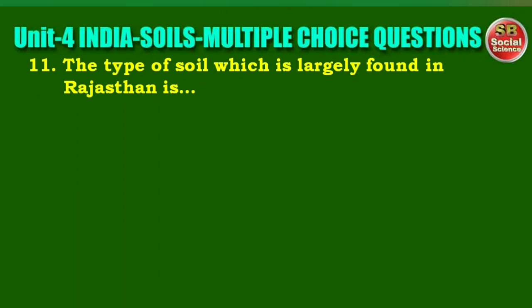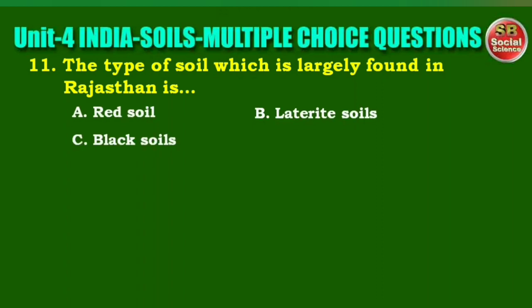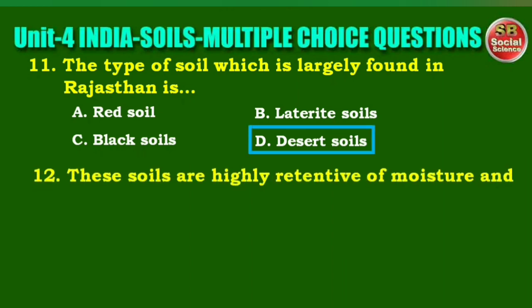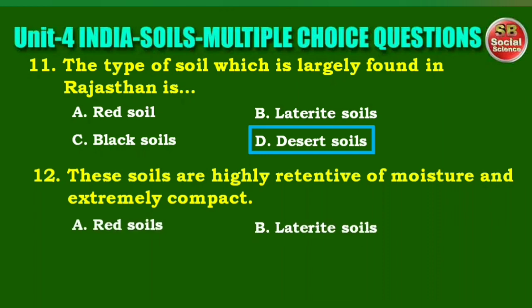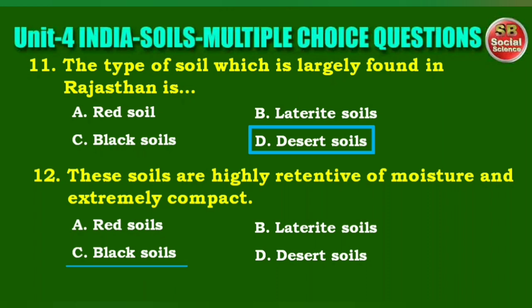Next question: the type of soil which is largely found in Rajasthan is. Options are: red soil, laterite soil, black soils, desert soils. The right answer is option D, desert soils. Next question: these soils are highly retentive of moisture and extremely compact. Options are: red soils, laterite soils, black soils, desert soils. The right answer is option C, black soils.